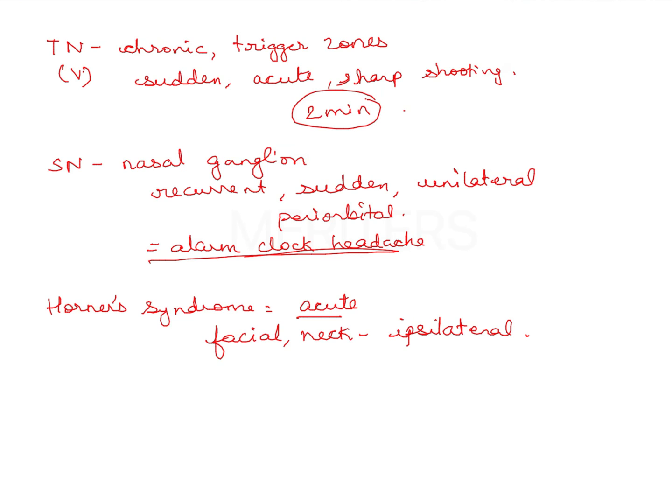In glossopharyngeal neuralgia, there is a repeated episode of severe pain in tongue, throat, ear, and tonsil. Three T's, remember: tongue, throat, and tonsil. These are the specific features of pain in the different conditions given here.